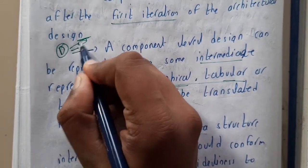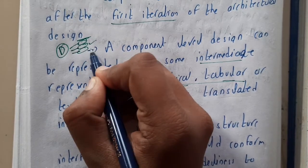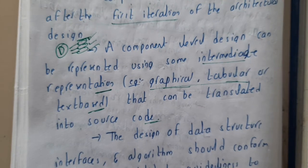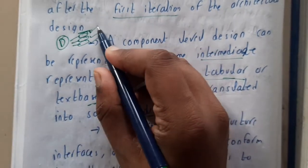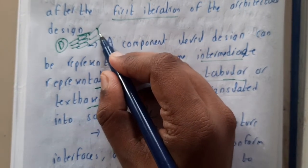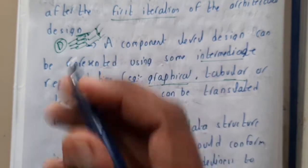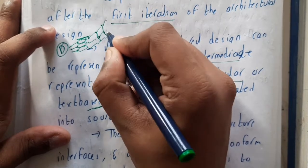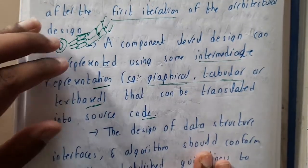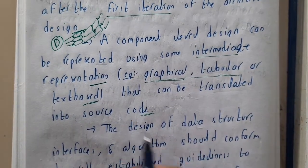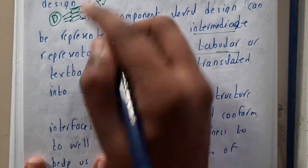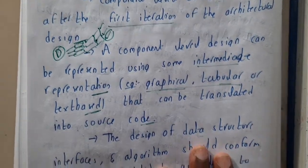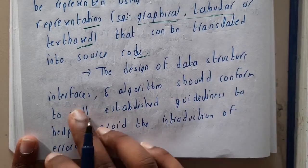In designing, we divided it into three types: analysis design, architectural design, and component level design. These are the three designs we followed. Once component level design is done, you will automatically be going through coding.